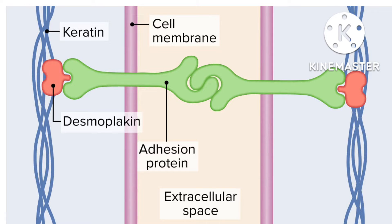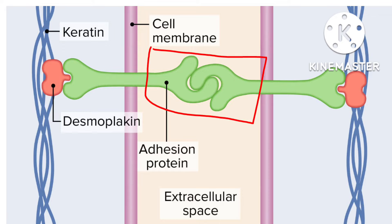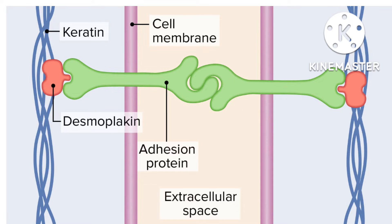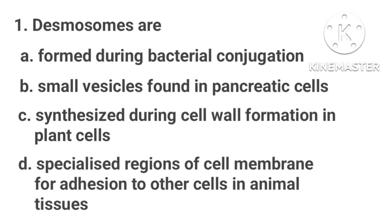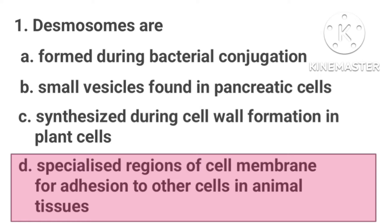Desmosomes are a type of anchoring junction in animal tissues that connect adjacent cells. Anchoring junctions are button-like spots found all around cells that bind adjacent cells together. So the correct answer is Option D.